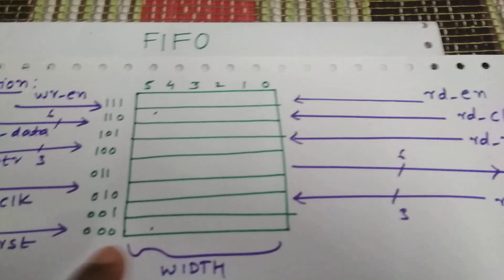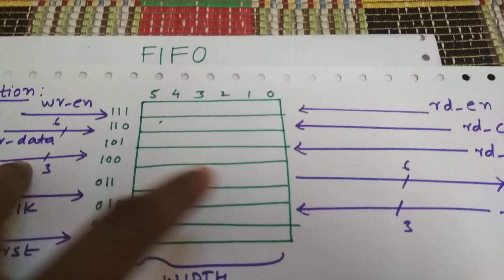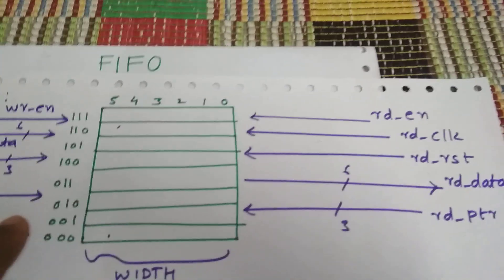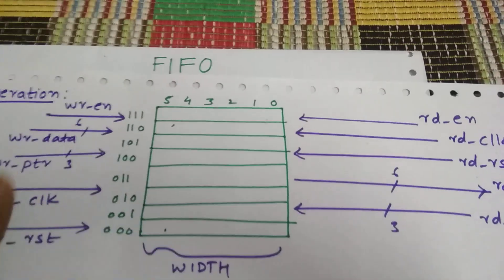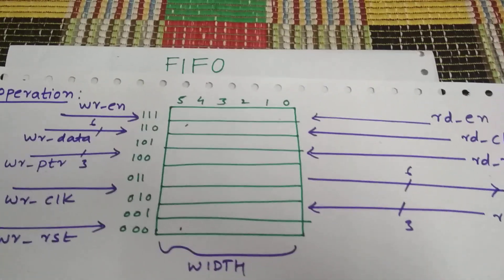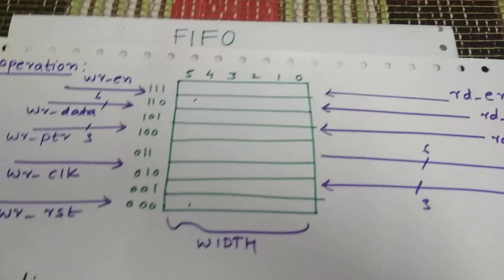will be pointed to 0. These are just for reference, not pointing to 010 or 101. But in the beginning, when FIFO contains nothing, they will be pointed to 000.